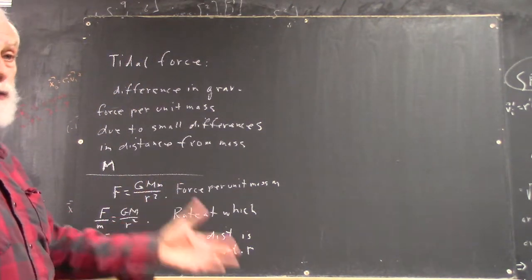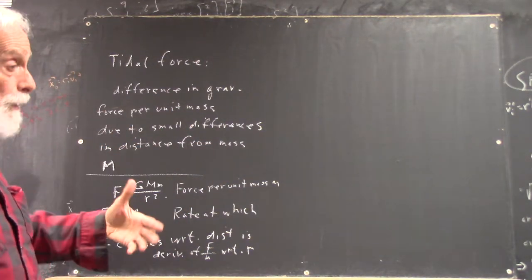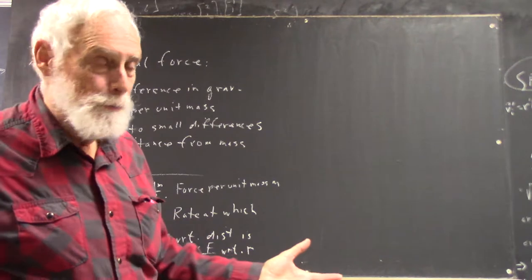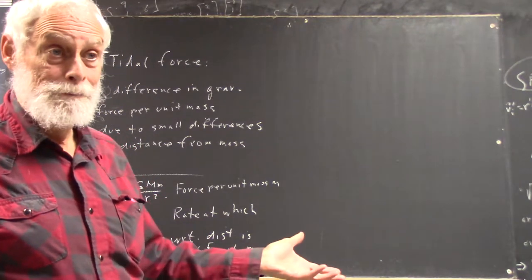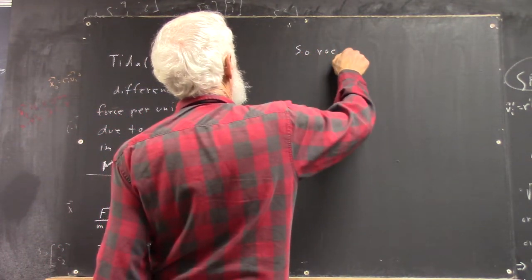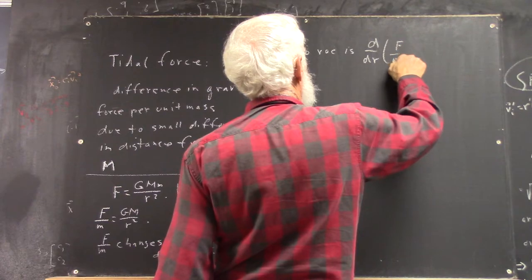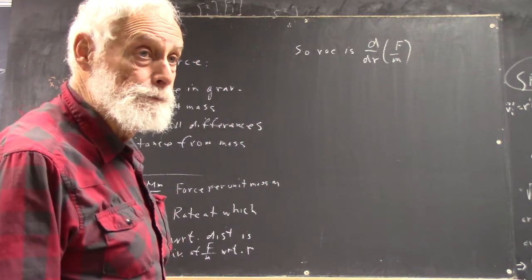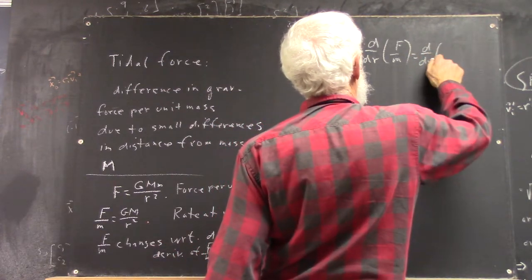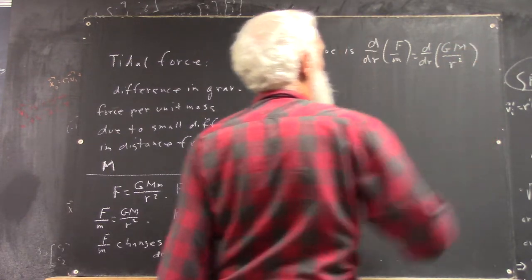Interpretation of a derivative, the use of a derivative to answer a question of this nature. Any question that involves a change in one quantity due to a change in another puts you immediately in the context of a derivative and a differential. So, anyhow, that rate, the rate of change is derivative with respect to r of f over m, right? Which is the derivative with respect to r of big G big M over r squared, right?